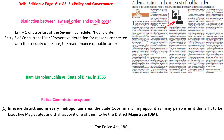The second issue is a critical analysis of the police commissioner system. First, let us understand the distinction between law and order and public order. When it comes to public order, where is it defined? It is present in the 7th Schedule of the Indian Constitution. We have the union list, state list, and the concurrent list. Under the state list, entry 1, we have public order — so it falls under the state list.